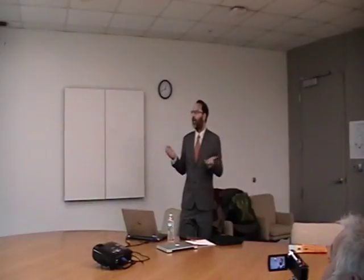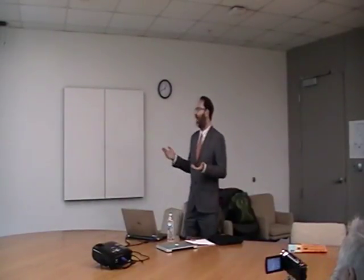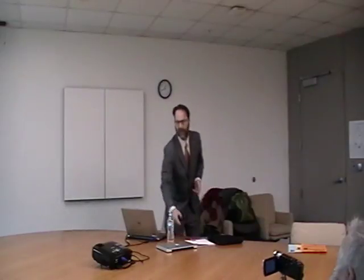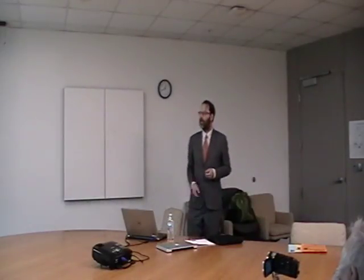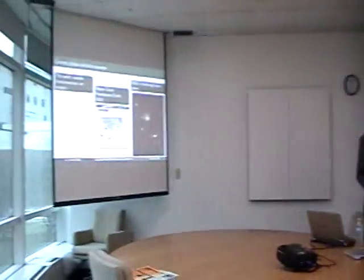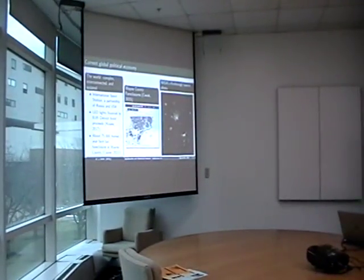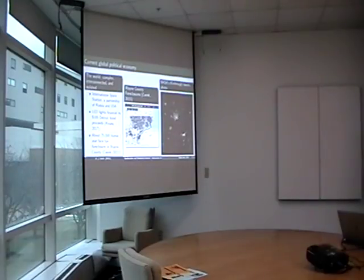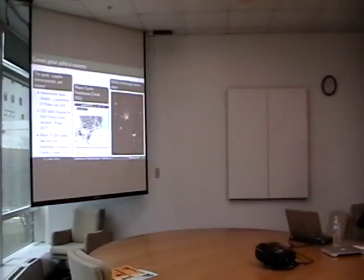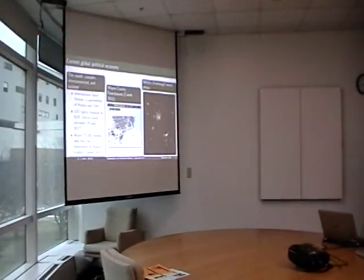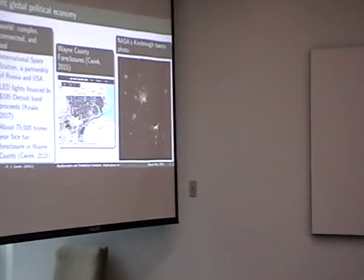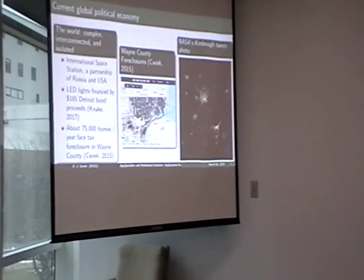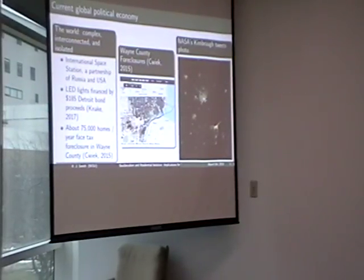So where are we now in the world today? We live in, or we're currently in, a city that has been experiencing substantial foreclosures, but at the same time was able to finance a complete replacement of streetlights. It's a bit of a paradox. Capital is not available to keep people in their homes, but it is available to replace streetlights. And why is that?